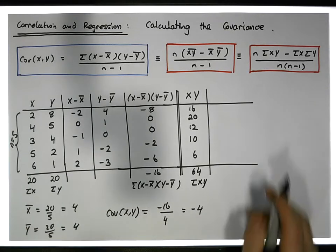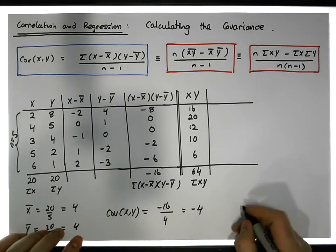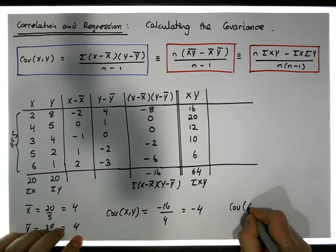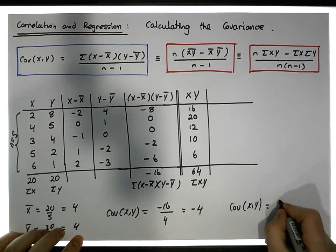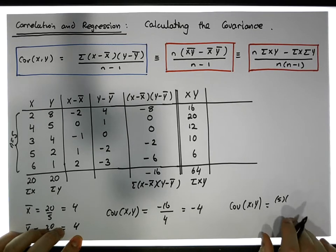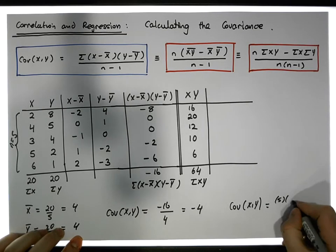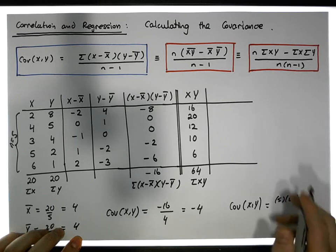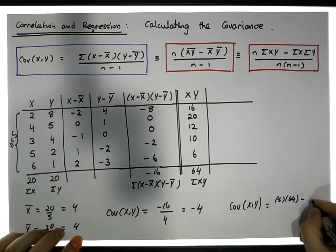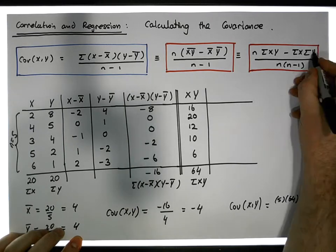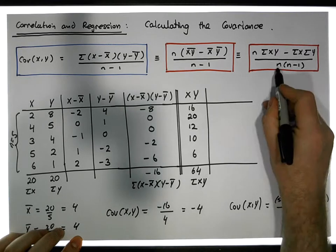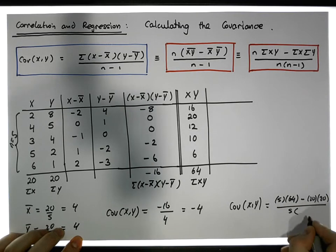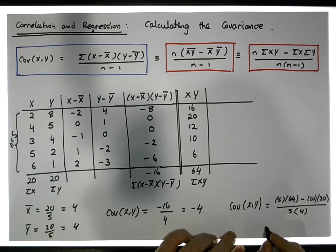So in this particular form, the covariance of x and y is equal to n times the sum of the x*y's, minus the sum of the x's times the sum of the y's, all divided by n times (n minus 1). Here n is 5, the sum of x*y's is 64, the sum of x's is 20, and the sum of y's is 20, all divided by 5 times 4.